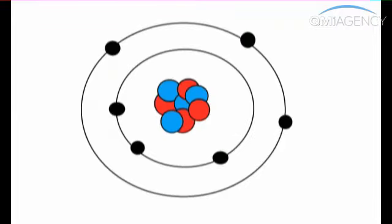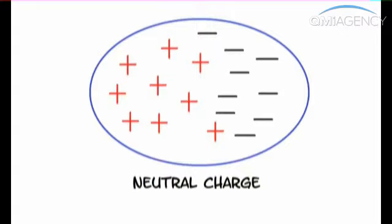Static electricity involves protons, electrons, and charges. Protons and electrons are super teeny particles that orbit the nucleus of an atom. Generally, stuff has a neutral charge. This means it has the same number of protons and electrons, but electrons can move.